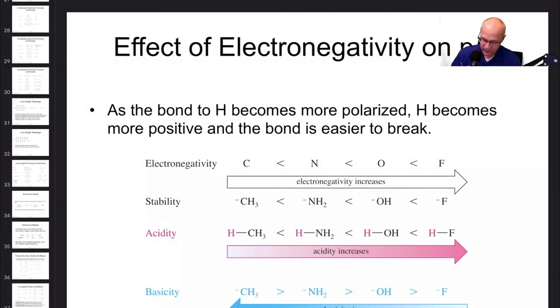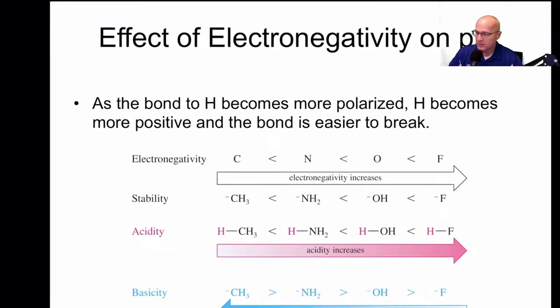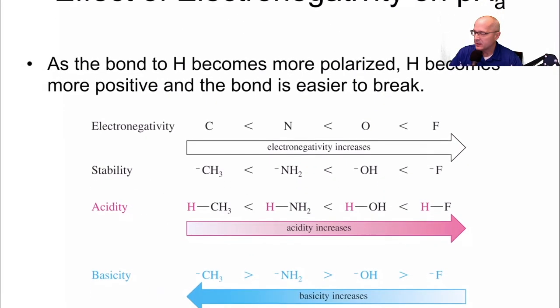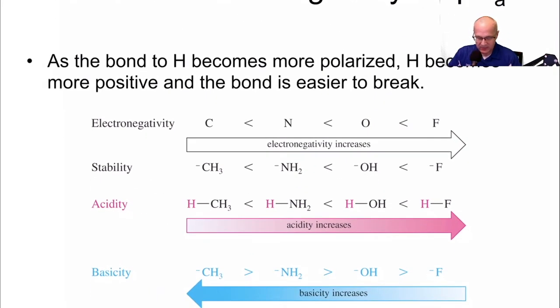Because F minus is more stable than OH minus, HF is a stronger acid than water. Water is a stronger acid than ammonia. Ammonia is a stronger acid than methane. Fluoride is not a very good base compared to OH. OH is a much better base than fluoride, although NH2 is a stronger base than OH minus. CH3 is better than all of them.